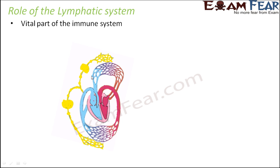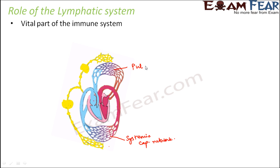The lymphatic system is located very close to the blood capillaries. We have two networks of capillaries of blood: the systemic capillary network, which is part of the systemic circulation, and the pulmonary capillary network, which connects to the lungs. And alongside these is our lymphatic system.